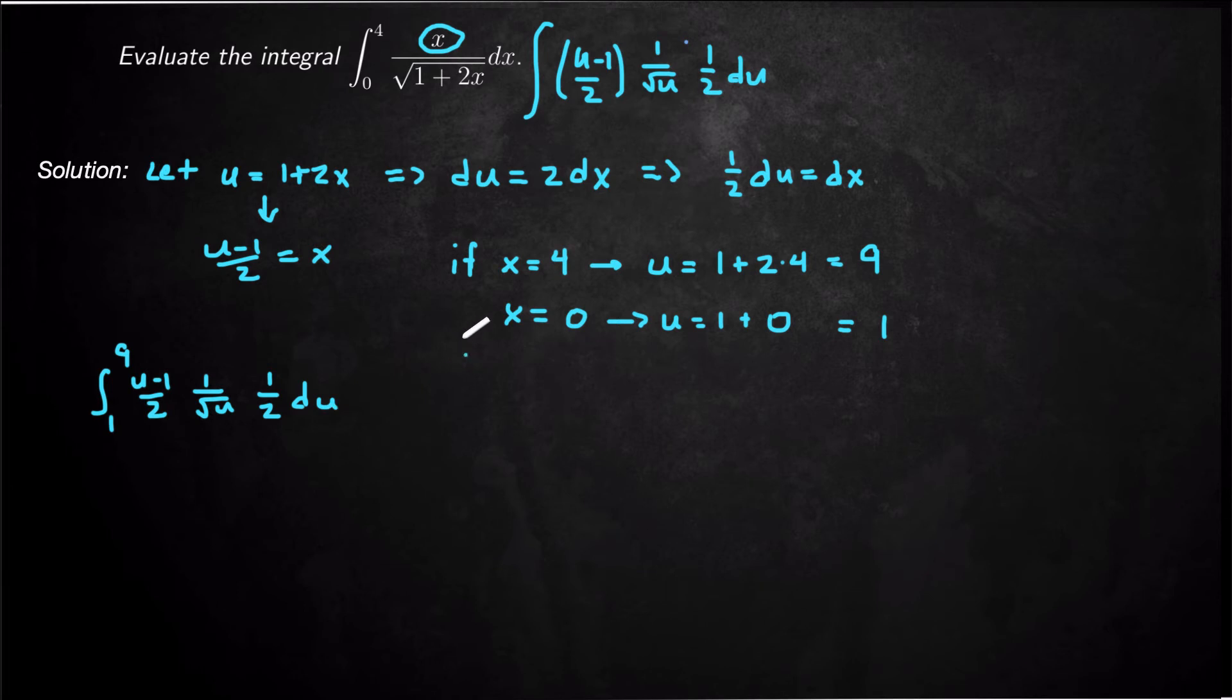So I did a u substitution, but I had to use it for all it was worth. I changed my dx to du. I changed my square root of 1 plus 2x to square root of u, but I also had to change x to be u minus 1 over 2. So now we just got an integral, a definite integral.